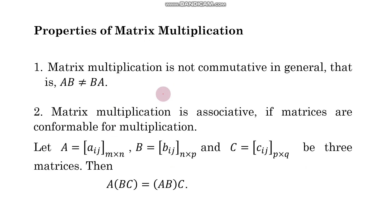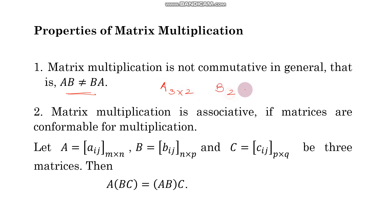Now, properties of matrix multiplication. Matrix multiplication in general is not commutative, because it is not necessarily true that if AB is defined, then BA is also conformable for multiplication. For example, if order of A is 3 by 2 and order of B is 2 by 4, you can multiply AB and get a matrix C of order 3 by 4, but BA would require multiplying a 2 by 4 matrix with a 3 by 2 matrix, which is not possible. So matrix multiplication is not commutative in general.